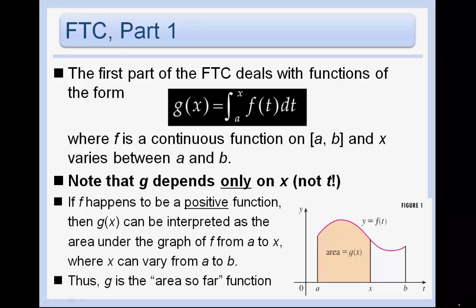The first part of the Fundamental Theorem of Calculus deals with functions of the form g of x equals the integral from a to x of f of t dt, where f is a continuous function on the interval from a to b, and x varies between a and b. So we're going from a, which is a fixed point, to some other point which is a variable.